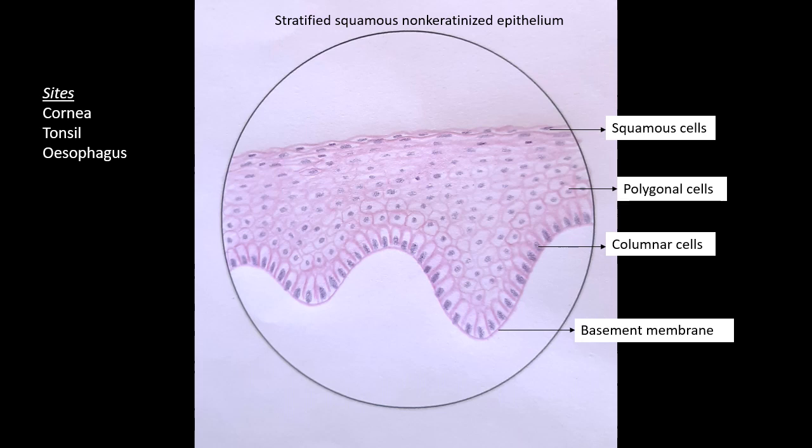There is a basement membrane over which there is a basal layer of columnar cells, then an intermediate layer of polygonal or polyhedral cells. As we go higher and higher up, the cells flatten, and the superficial layer is a layer of squamous cells. They are seen in sites like cornea, tonsil, and esophagus.